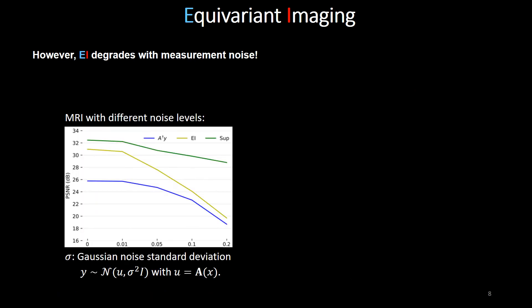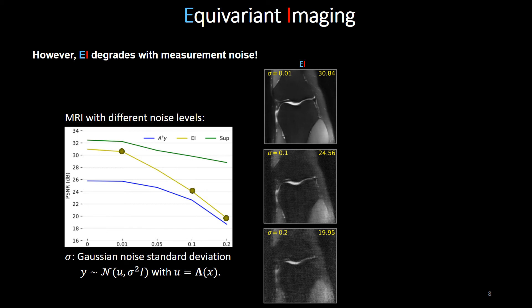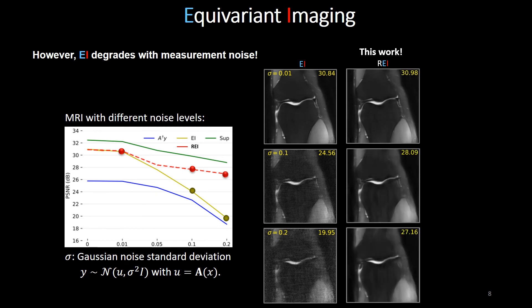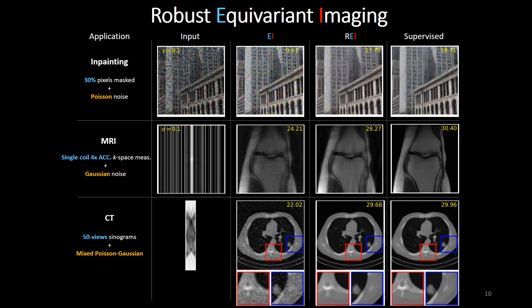However, as can be seen, we found the performance of EI degrades with measurement noise. In this paper, we propose a robust extension to EI to solve this limitation. The main idea is to exploit Stein's unbiased risk estimator (SURE) to handle the noise and learn the image model with an equivariance constraint. Please check our paper for the detailed formulation of our SURE losses. We compared robust EI with EI and supervised learning on different inverse problems. Robust EI achieved considerable performance gains, approaching the quality of reconstruction trained with ground truth data using supervised learning.